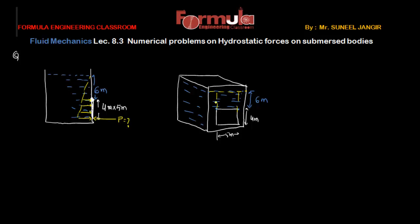The variation of pressure on the gate is shown in the pressure intensity diagram. The hydrostatic force F equals w·A·yc, where w is the specific weight of water, A is the area of the gate (4×5), and yc is the distance of the center of gravity of the gate from the free surface of the fluid. The center of gravity is located at mid-height of the gate.